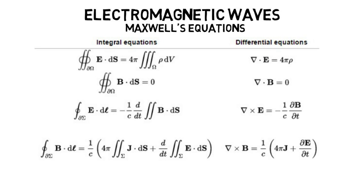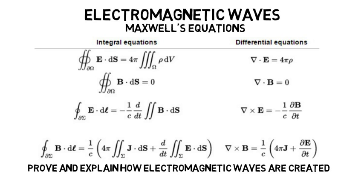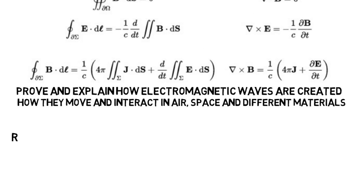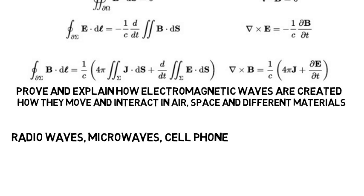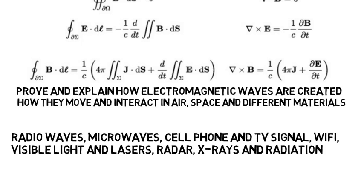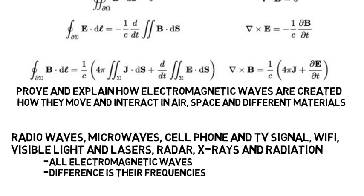Lastly, there's a class solely on electromagnetic waves, where you look at Maxwell's equations, which again look complex, but don't worry, you wouldn't even see these until your last year probably. But these prove and explain how electromagnetic waves are created and how they move and interact in air, space, and different materials. This is basically a subfield in itself, because radio waves, microwaves, cell phone and TV signal, wifi, visible light and lasers, radar, x-rays, radiation, are all electromagnetic waves. The only real difference is their frequencies.